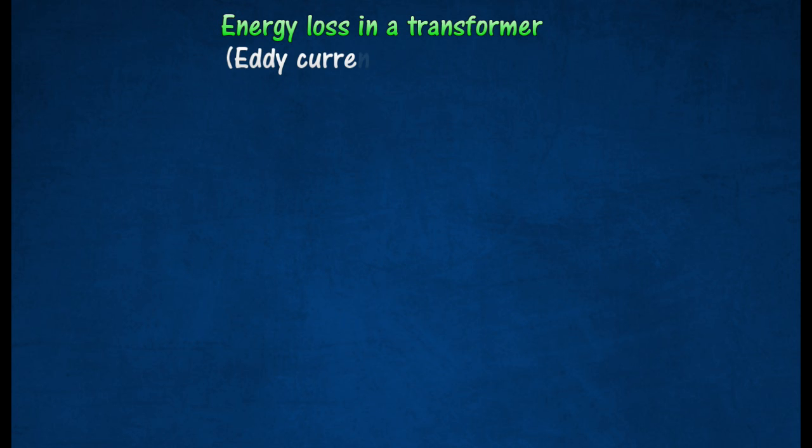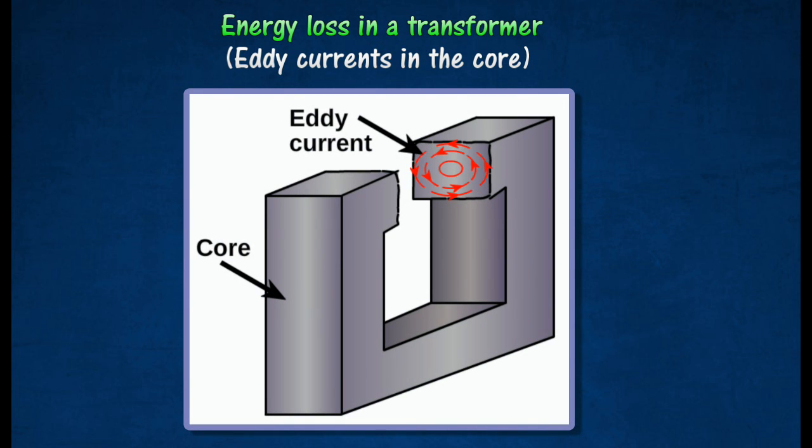The currents induced in the cores are known as eddy currents, as they flow in little circles in the cores. Eddy currents cause heat to be produced in the cores, resulting in energy loss.